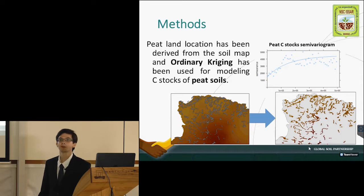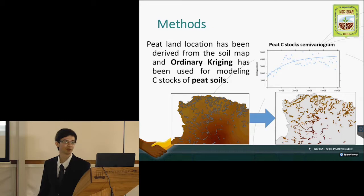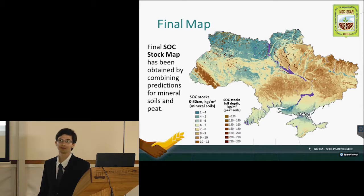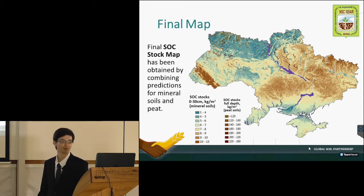For peatlands, we had to use a different technique. For modeling, we used ordinary kriging, and for the location we took the data from the soil map. The final resulting map of organic carbon stocks in Ukraine was obtained by combining the predictions for mineral soils and for peat.